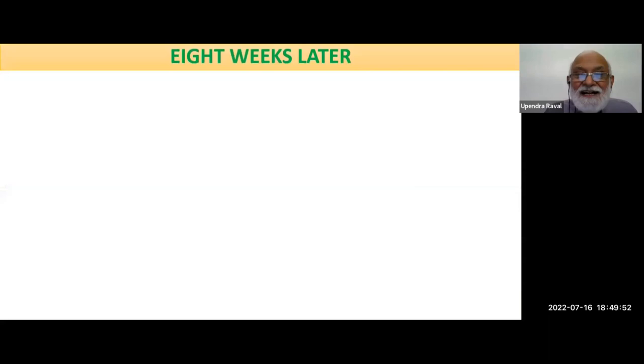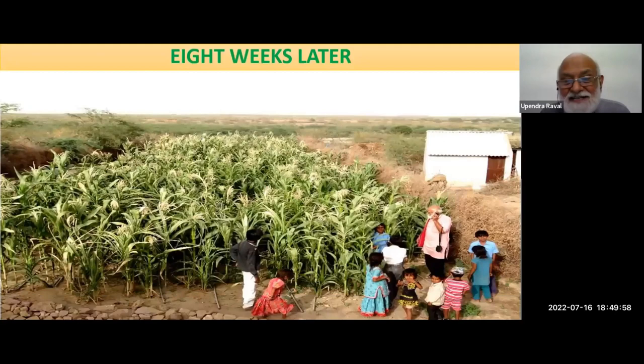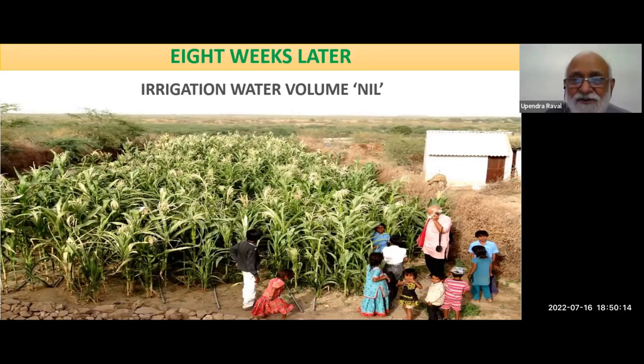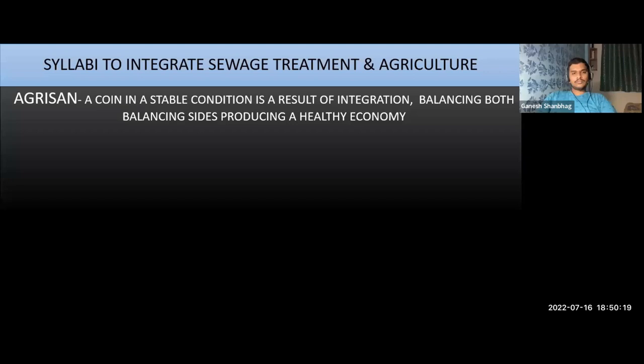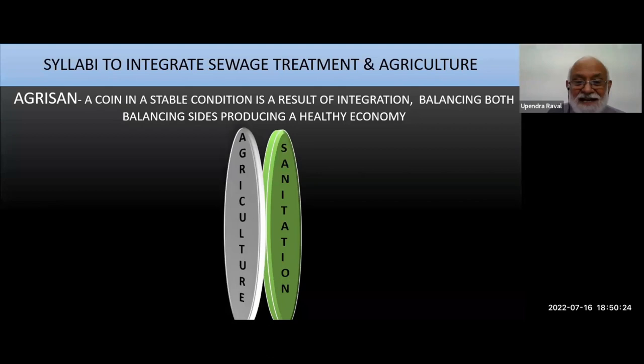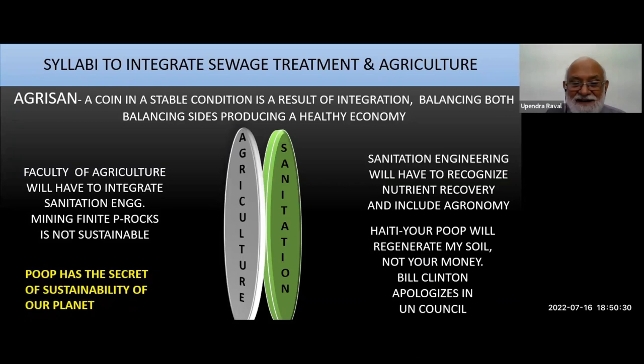This is chili and tomato. What was this eight weeks before? Eight weeks later it was this — you can see the cabin, you can see me on the right corner. This picture was taken by Shakti Bhatt; the maize grew nearly six to seven feet. My fresh water irrigation volume is nil. In our academia and engineering courses, agriculture and sanitation should not be separated — they are two sides of the same coin.